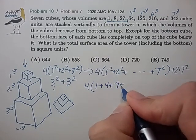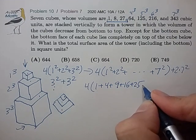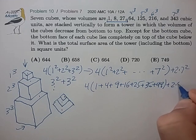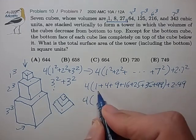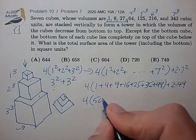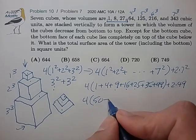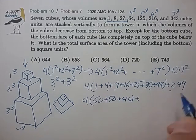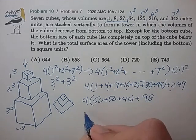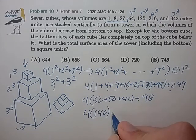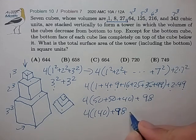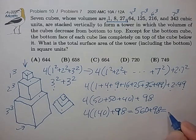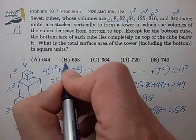4 plus 9 plus 16, 25, 36, 49, plus 2 times 49. Let's see, 1 and a 49, that gives us a 50. A 9, a 60, and a 25, that's a 50. The 4 and the 36 is a 40. 2 times 49 is 98. So that's 4 times 140 plus 98. And that's a 560 plus 98, 658 for choice B.